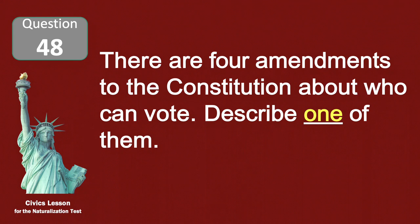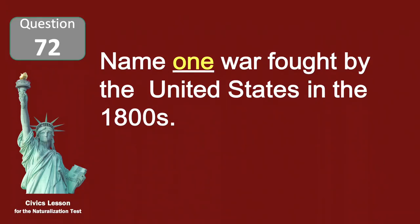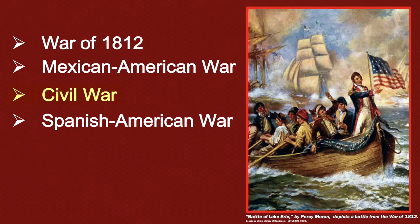There are four amendments to the Constitution about who can vote — describe one of them. Any citizen can vote. Name one war fought by the United States in the 1800s. The Civil War.